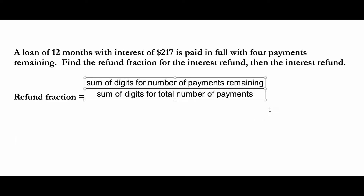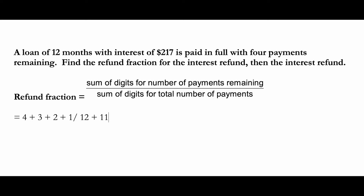we're going to do 4 plus 3 plus 2 plus 1, divided by the sum of digits for total number of payments, which is equal to 12 plus 11 plus 10 plus 9 plus 8 all the way down to plus 1.